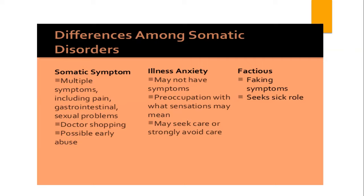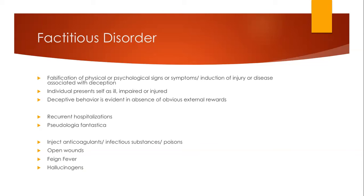Factitious disorder, formerly called Munchausen's, is when an individual intentionally causes illness or injury to themselves in order to receive attention. The DSM-5 diagnosis is that they have a falsification of physical or psychological signs or symptoms, the individual presents as ill, impaired, or injured, and the deceptive behavior is evident in the absence of obvious external rewards - meaning they wouldn't do this to get time off of work or anything like that.